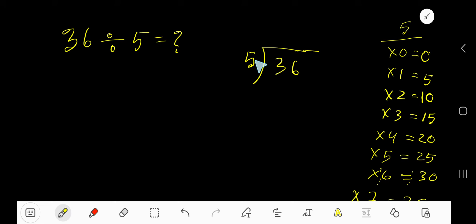So since 5 is a divisor, we need multiplication table of 5. 5 times 0, 0. 5 times 1, 5. 5 times 2, 10. 5 times 3, 15. 5 times 4, 20. 5 times 5, 25.